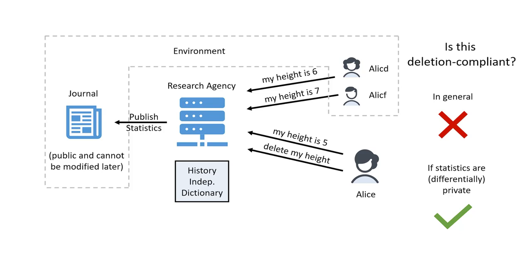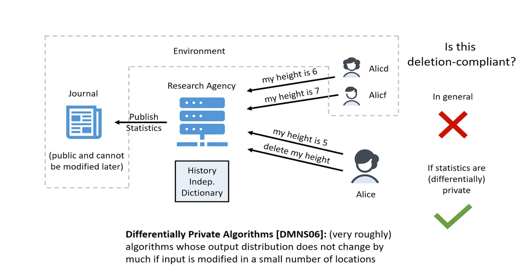The specific kind of privacy we are able to show this for is differential privacy. Statistics being differentially private roughly means that if only a few inputs change — like only a few users remove their input — then the statistics do not change by much, which essentially means it doesn't reveal that much about Alice's data in particular. This is why you can show that such a data collector actually does satisfy deletion compliance. So our definition provides a classification, and we have seen both data collectors that satisfy it and those that do not.